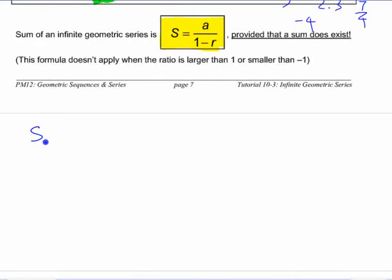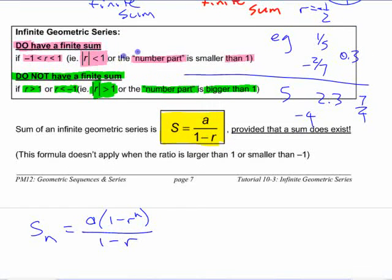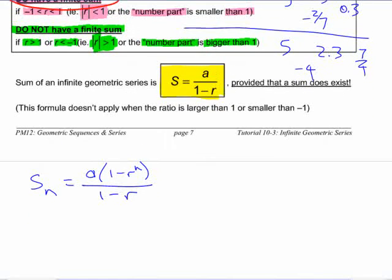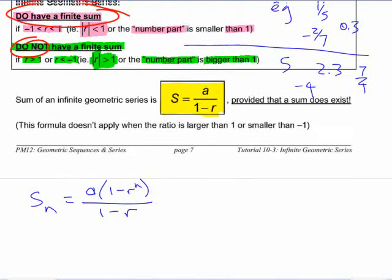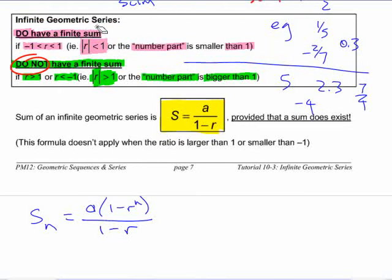We have one that says S_n is A_1 minus R to the N over 1 minus R. If you're okay with this idea that we looked at up here, that things do have a finite sum when the absolute value of the ratio is less than 1, or in other words, when it's a small number between negative 1 and 1, and they don't have a finite sum when the number part's bigger. So we're going to focus on looking at how you can calculate it if you do know that the ratio is smaller.